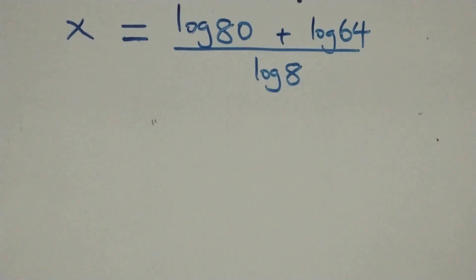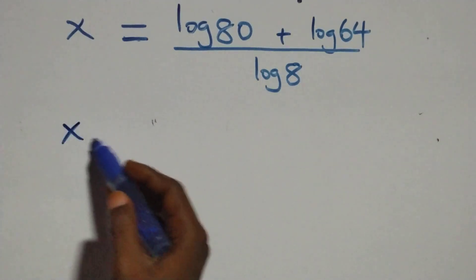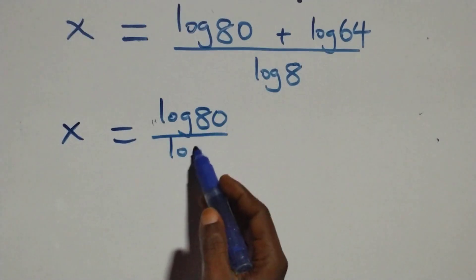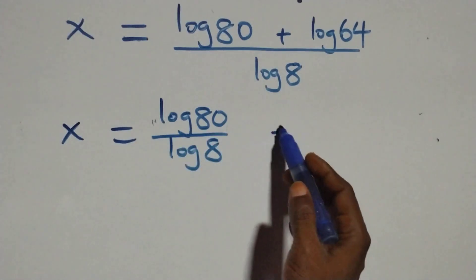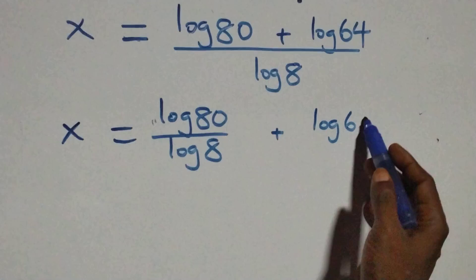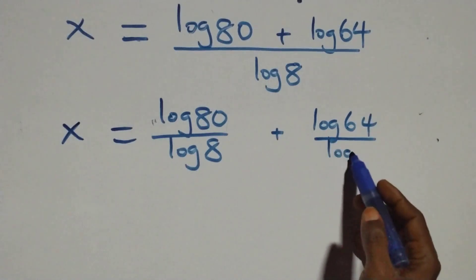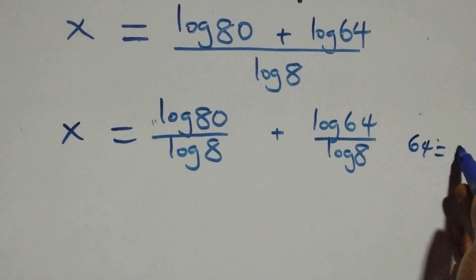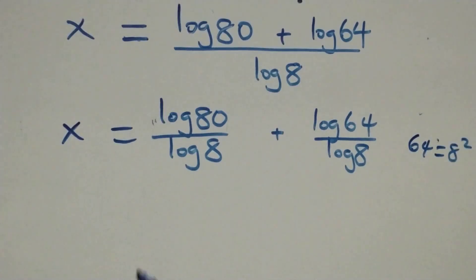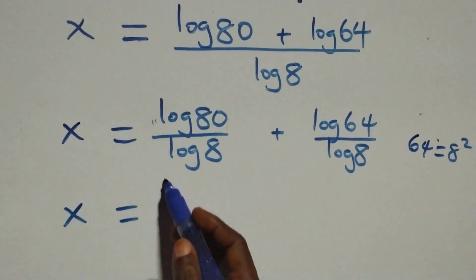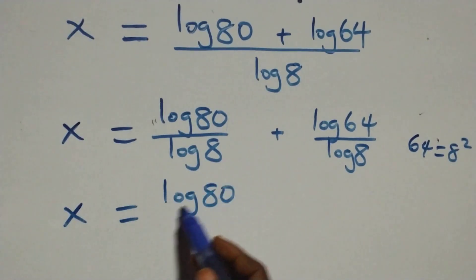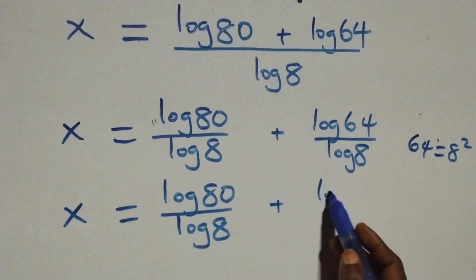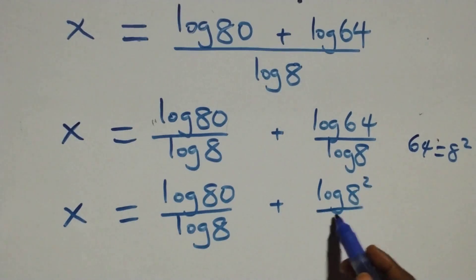We separate this into two fractions: x equals log 80 over log 8, plus log 64 over log 8. Now, 64 is the same as 8 times 8, which is 8 squared. So this becomes x equals log 80 over log 8 plus log 8 squared over log 8.